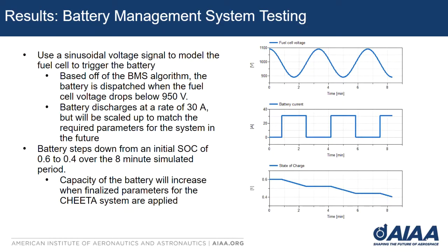I also tested the battery management system since it wasn't triggered in the simulation before. I used a sinusoidal signal voltage to model the fuel cell to trigger the battery to discharge. Based on the battery management system algorithm, the battery is dispatched when the fuel cell voltage drops below 950 volts, as shown in the graph on the right. The battery discharges at a rate of 30 amps, but this will be scaled up to match the required parameters for the system in the future. The battery steps down from an initial state of charge of 0.6 to 0.4 over the simulated period, which will help us scale the capacity of the battery when the finalized Cheetah parameters are applied.